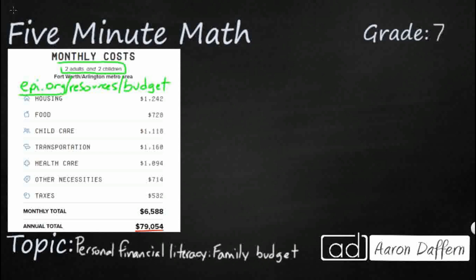According to the Economic Policy Institute, for a family of two adults and two children in the Fort Worth–Arlington area, you need $1,242 a month for housing, $728 for food, plus childcare, transportation, and so on. Monthly, you should need about $6,500, which turns into a little less than $80,000 annually in order to meet your basic needs.